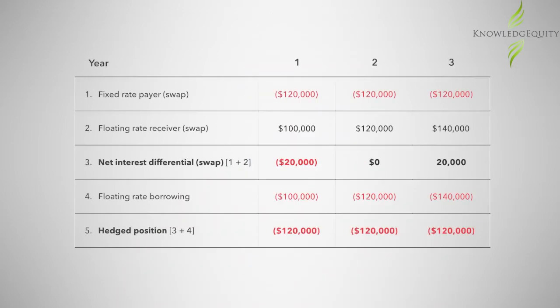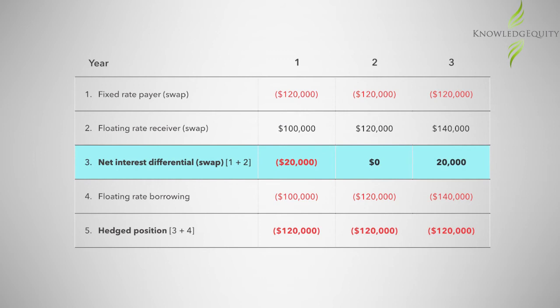We can then calculate all interest amounts and determine the actual cash flows that take place as shown in the table. Item one is the fixed rate pair, calculated as a principal amount of two million dollars times the swap fixed rate of six percent. Item two is the floating rate receiver, calculated as a principal amount of two million dollars times the swap BBSW rate. Item three is the net interest differential and represents the actual cash payment or receipt on the swap, calculated as item one plus item two.